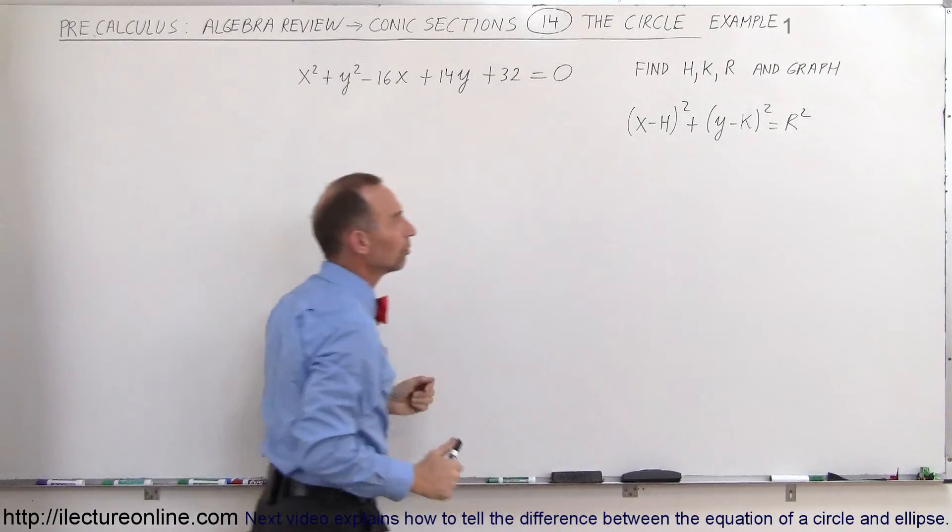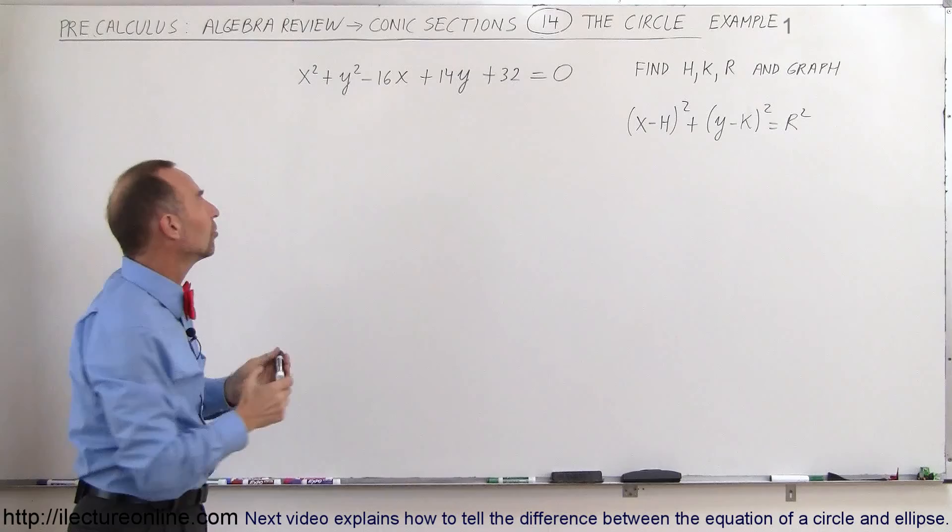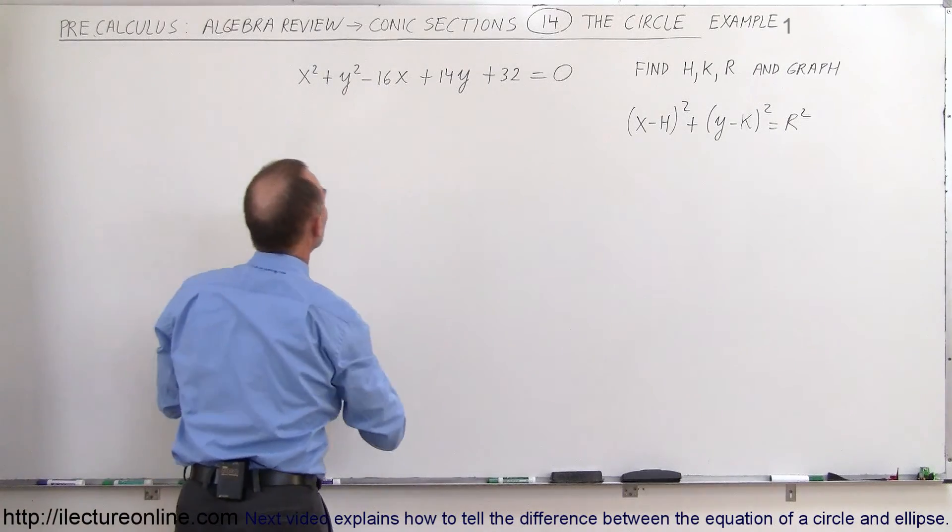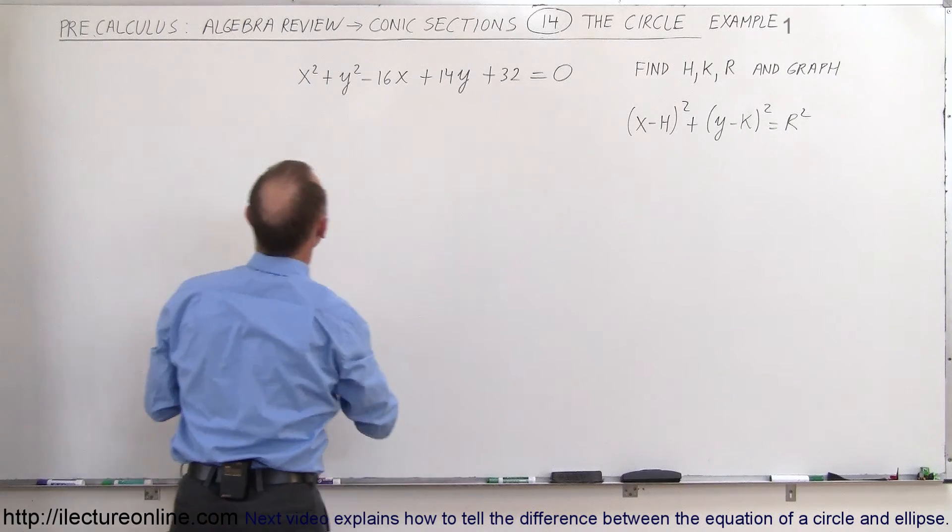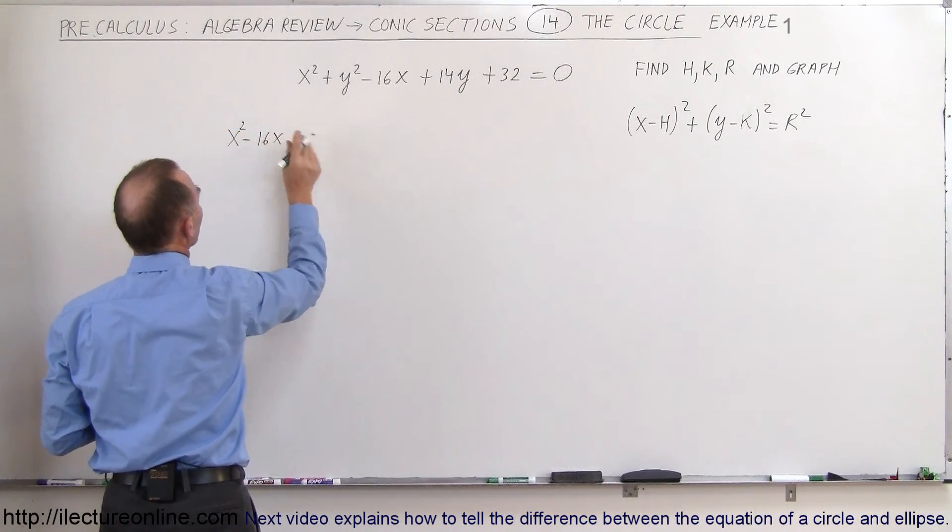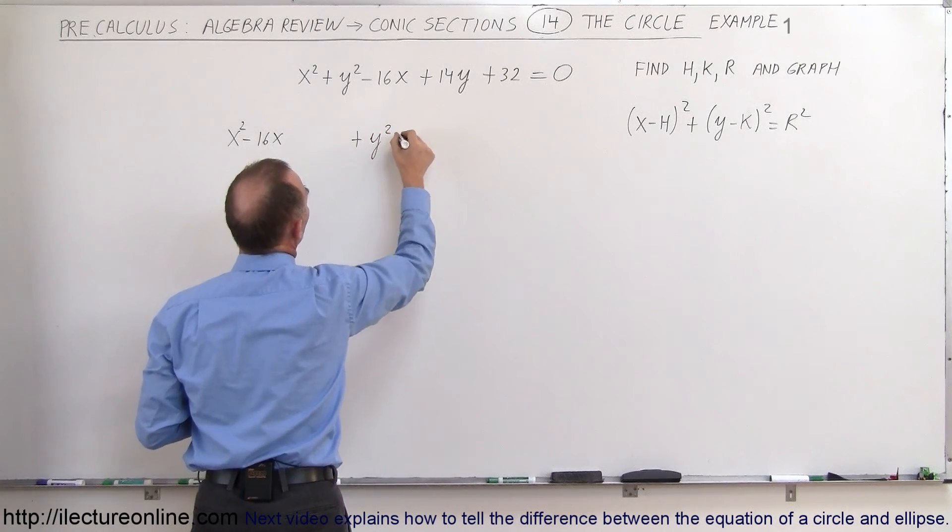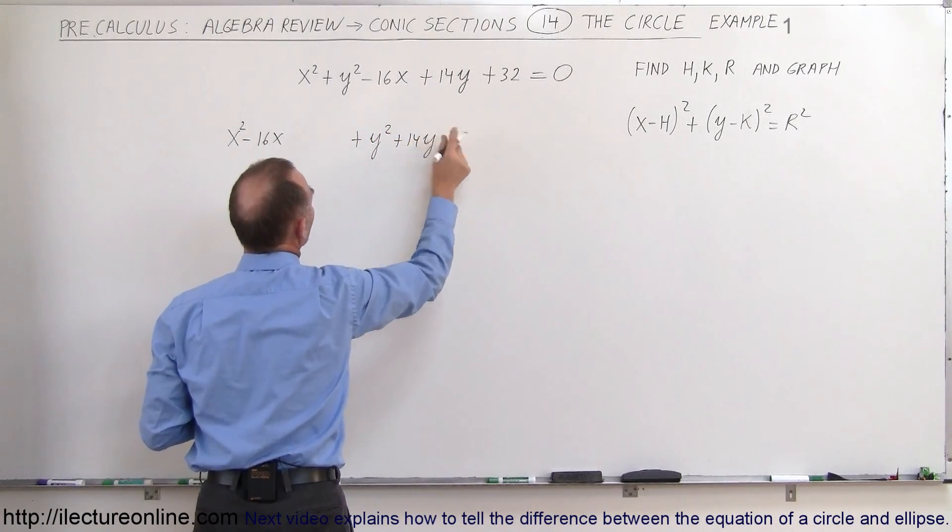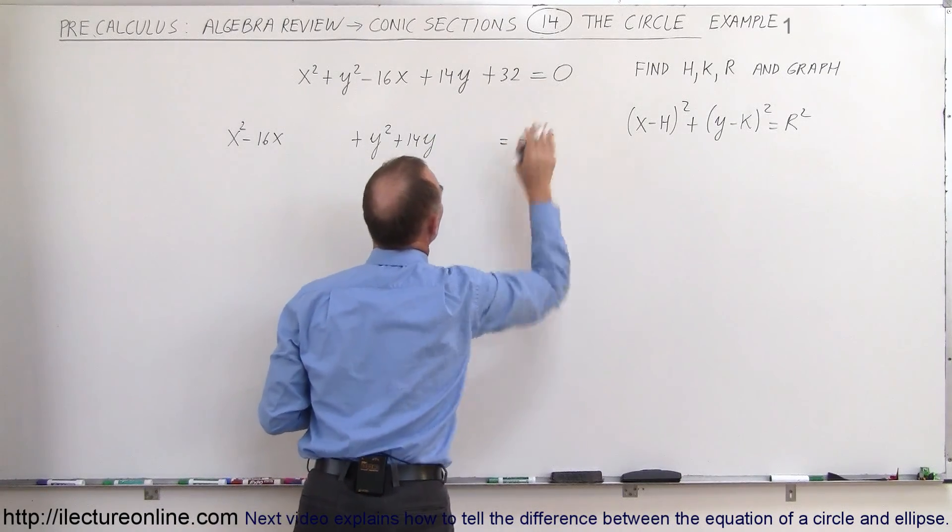That means we need to find the perfect squares. Let's group the x's together, group the y's together, and put the constant on the other side. So we end up with x squared minus 16x plus y squared plus 14y, and that equals minus 32 by bringing the 32 to the other side.